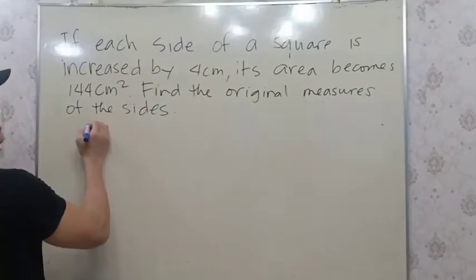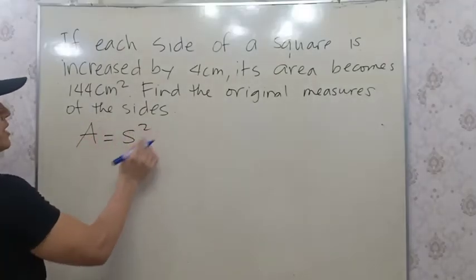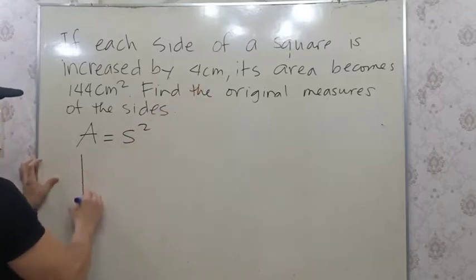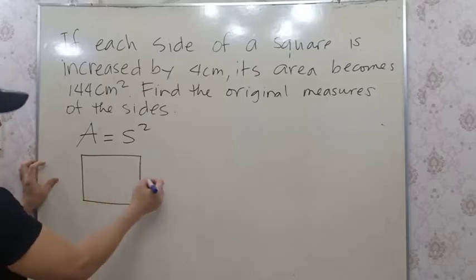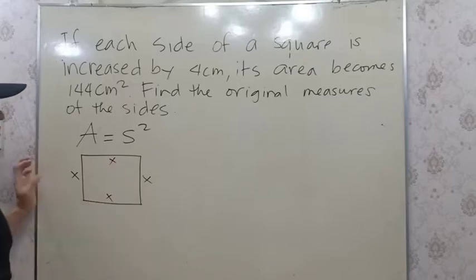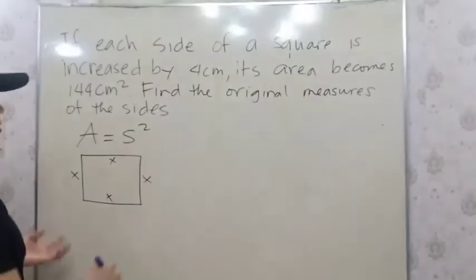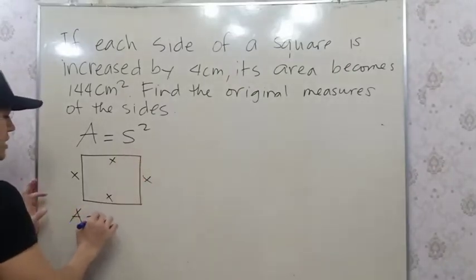Now, the area of a square formula is S squared, or the square of the sides. Let's say this is a square. We let X represent each side because we don't know the original measure of the sides. So using A = S², that means our area here is X².